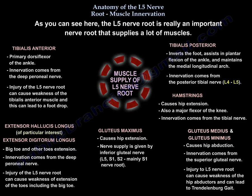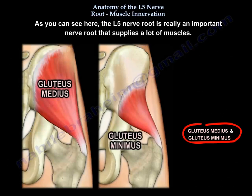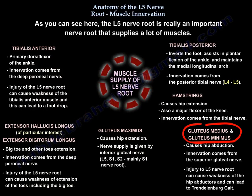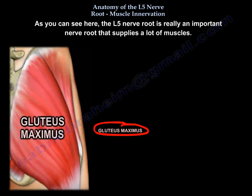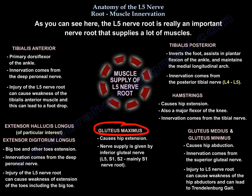The gluteus medius and minimus cause hip abduction, innervated by the superior gluteal nerve — injury to L5 can cause weakness of hip abduction and Trendelenburg gait. The gluteus maximus causes hip extension and is supplied by the inferior gluteal nerve, nerve roots L5, S1, and S2, mainly S1.